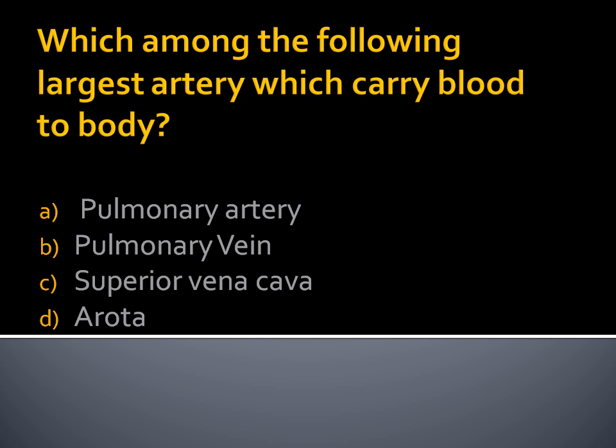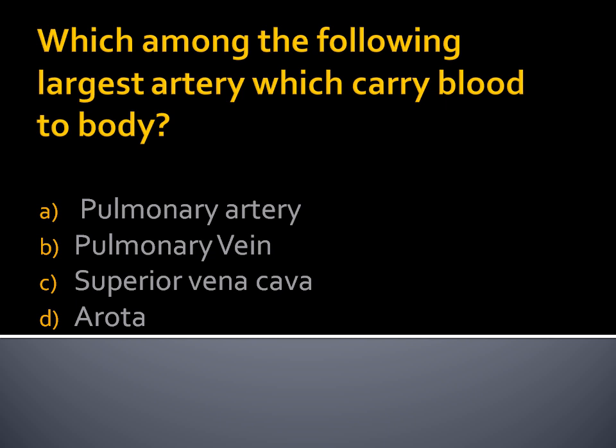Which among the following is the largest artery which carries blood to the body? Option A, Pulmonary artery. Option B, Pulmonary vein. Option C, Superior Vena Cava. Option D, Aorta. The largest artery that transfers pure blood to our body is the Aorta. Also, which among the following has no nucleus? Nucleus is present in WBC; RBC and Platelets do not have a nucleus. So the answer is both B and C.